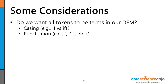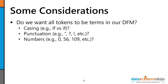Next, consider punctuation. Do you want periods, exclamation points, question marks, and double quotes in your term frequency matrix? The answer is typically no, because the bag of words model doesn't preserve word ordering and therefore doesn't preserve sentence structure — so punctuation really doesn't give you anything. We typically strip it all out. There are more advanced text analytics techniques that can take advantage of punctuation and sentence structure, but you'll be amazed at how far you can get just ignoring sentence structure.